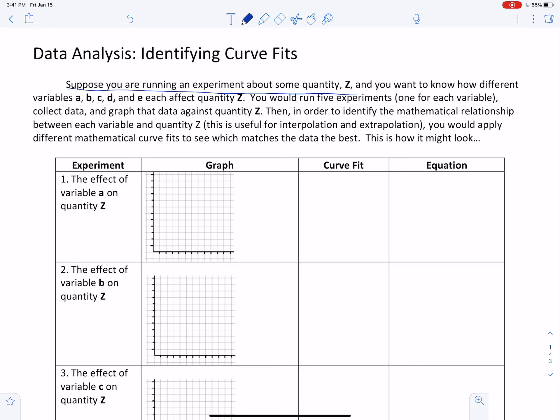For example, let's say you're running an experiment about how changes in a plant's environment affect its growth height. Maybe those variables might be things like the amount that you water the plant or the number of minutes of sunshine the plant gets each day or the humidity of the air or the wind speed by the plant. So you have a bunch of different variables and you're each measuring how they affect quantity Z, which in this case would be the height of the plant.